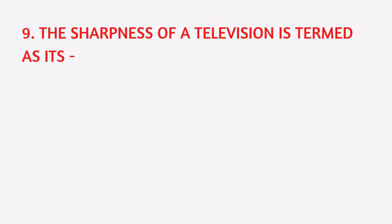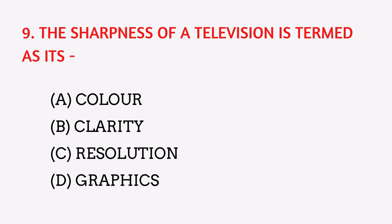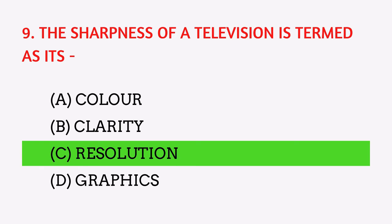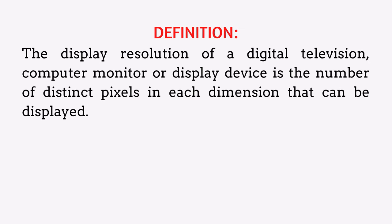The sharpness of a television image is termed as its what? The answer is resolution. The display resolution of a digital television, computer monitor, or display device is the number of distinct pixels in each dimension that can be displayed.